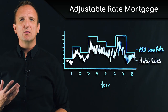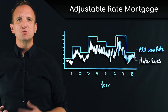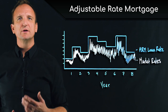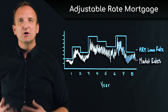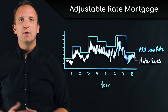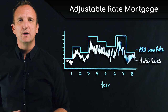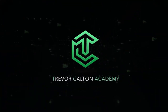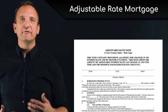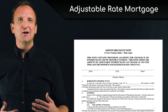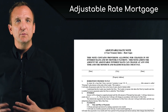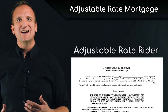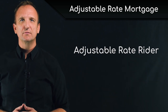Adjustable rate loans are mortgage loans where the interest rate adjusts at certain predetermined intervals. In this video, we're going to go over the different components of the adjustable rate mortgage. These components or provisions are typically outlined in an adjustable rate promissory note or an adjustable rate rider that is attached to the original promissory note.